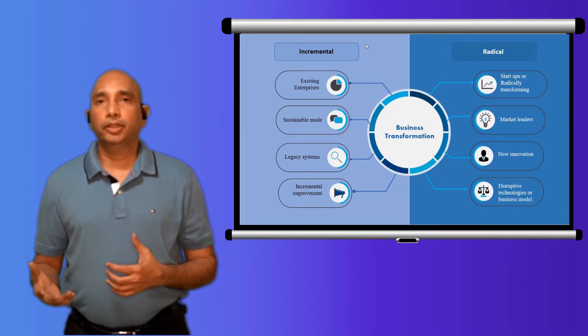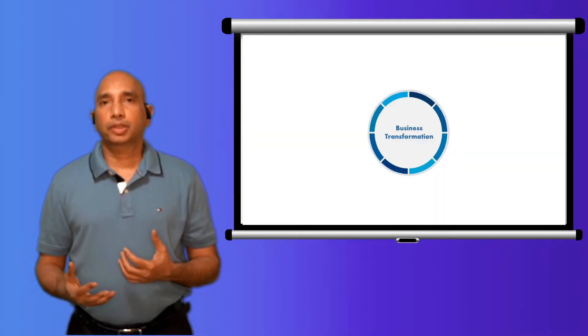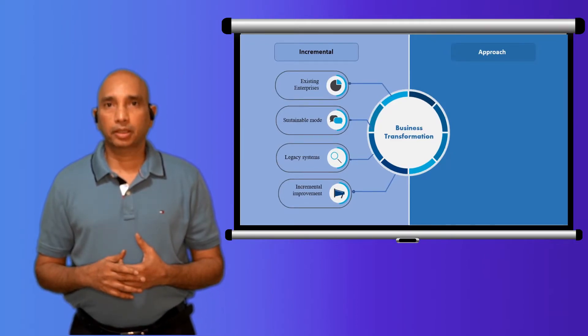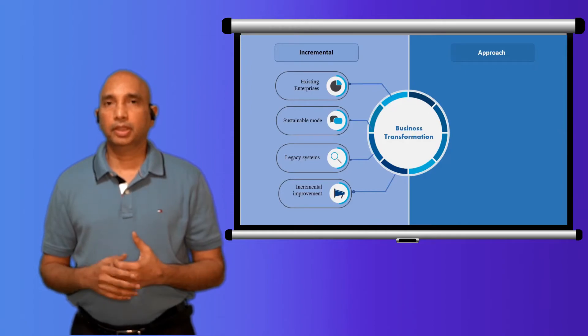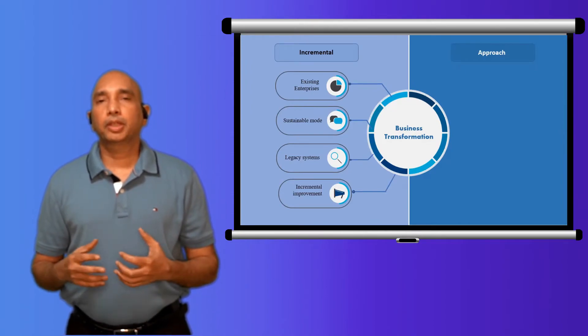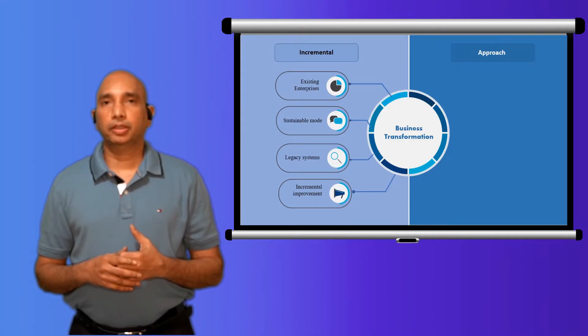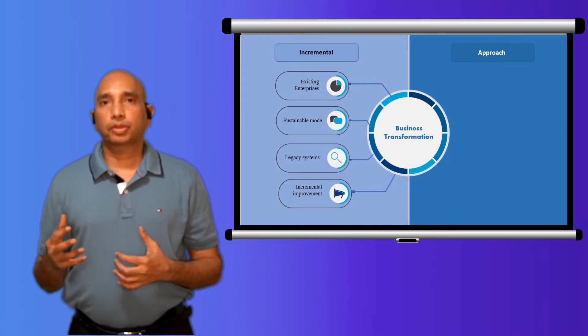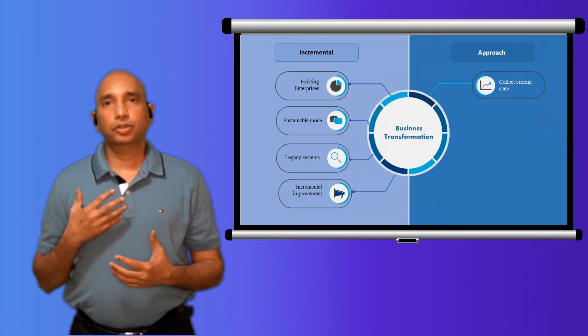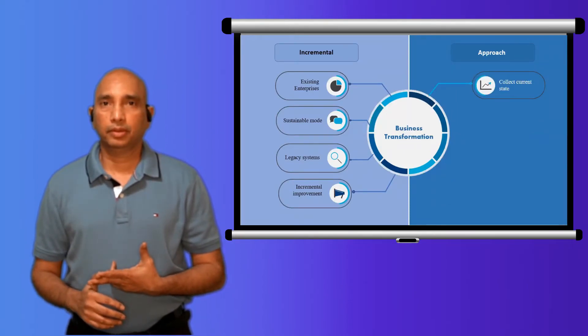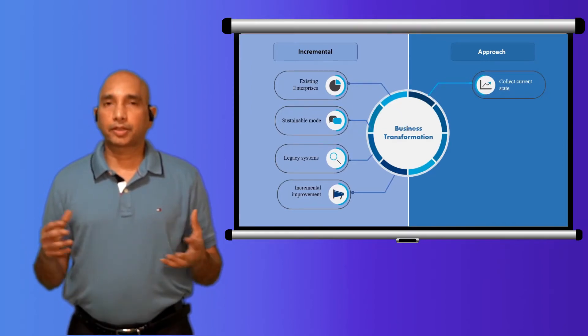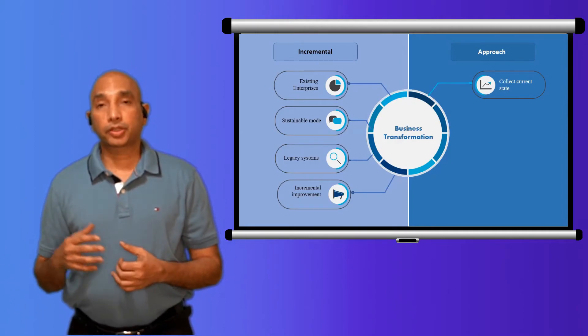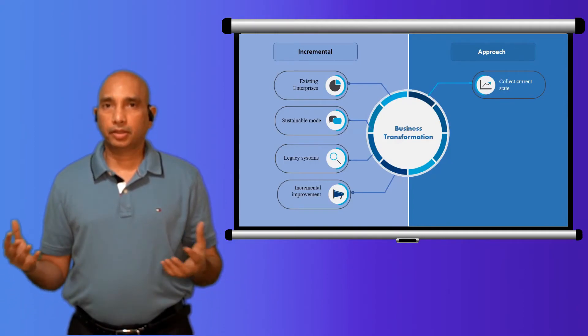Now in this video I would like to give an approach that you can take to bring incremental transformation. If you want to bring some incremental improvements within the organization, what is the approach that you can take? So the approach could be: first, collect your current state - your as-is, like what processes you have, what systems you have, what assets you have.